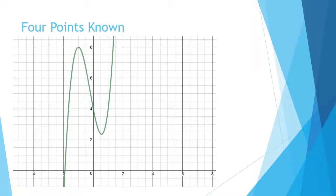Next type: if we have two known x-intercepts but the third one we'd have to estimate, we don't want to estimate. So instead we're going to use another method called the four-points-known method — we're going to determine four points on this curve.